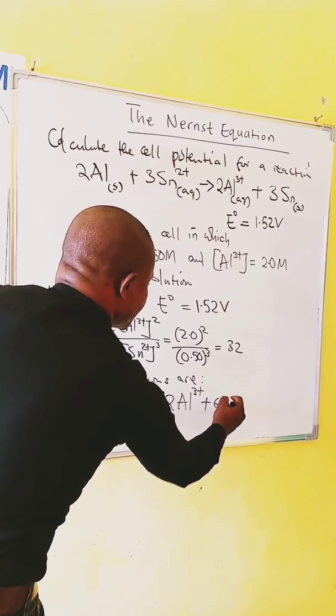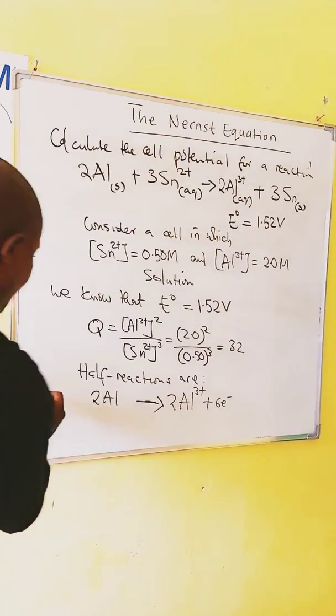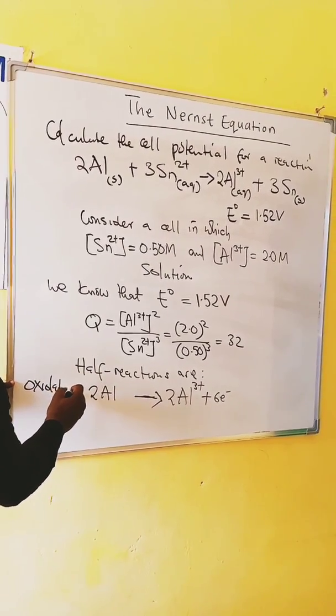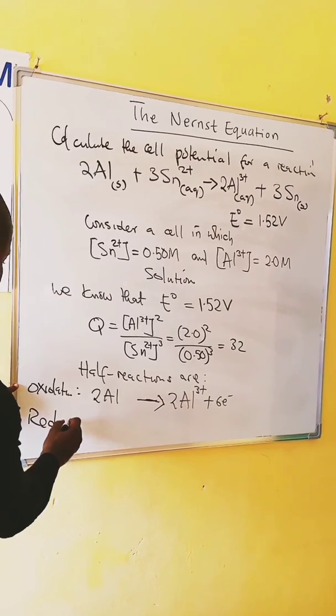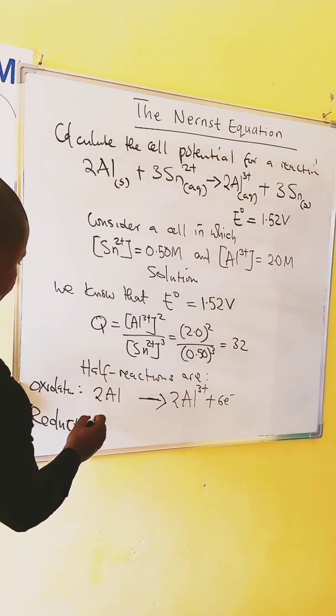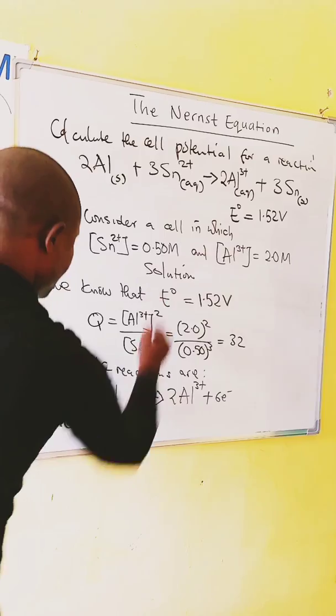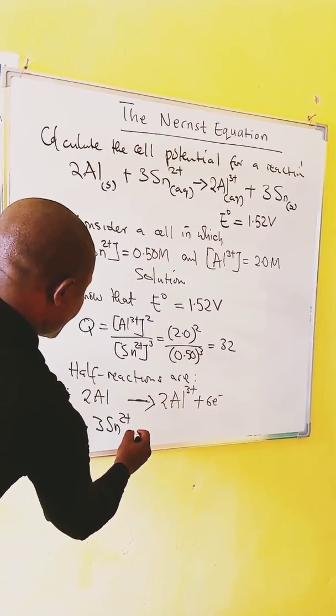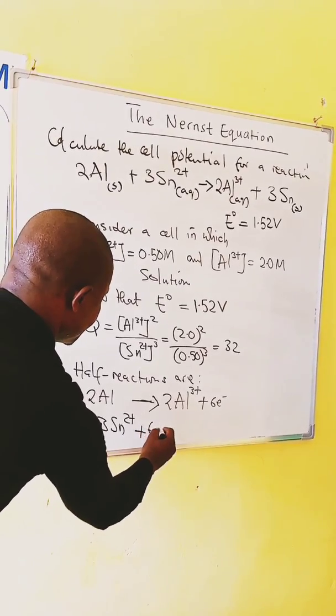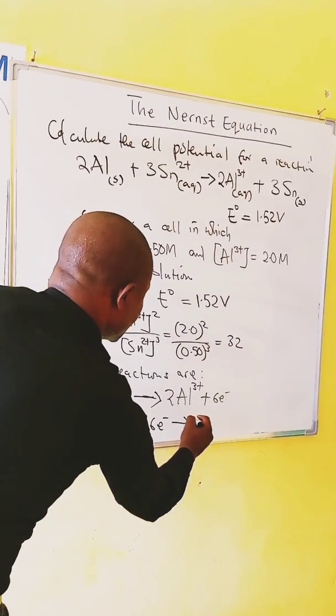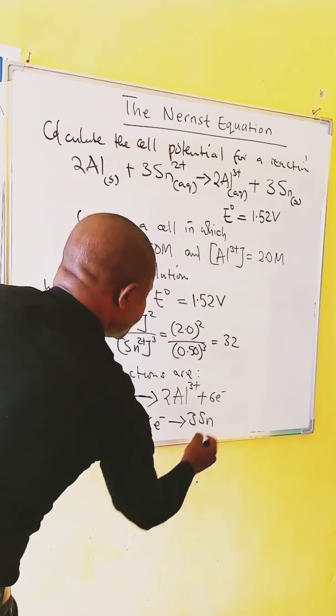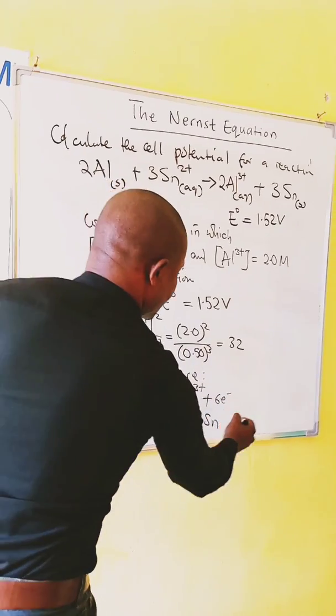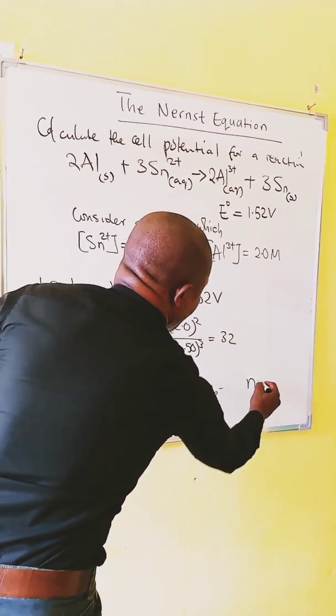This is our oxidation. The next one will be our reduction. 3 tin 2+ plus 6 electrons then forms 3 tin. The number of electrons transferred in this case is 6, so n is equal to 6.